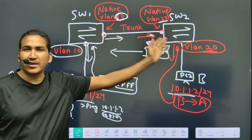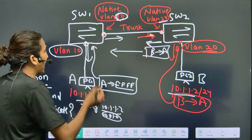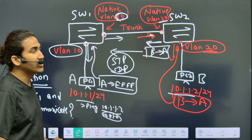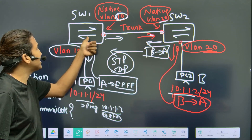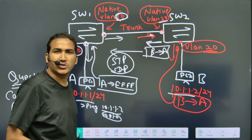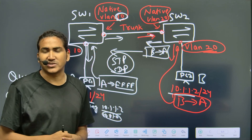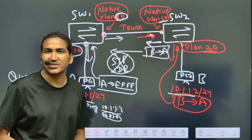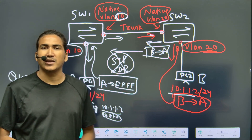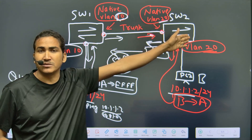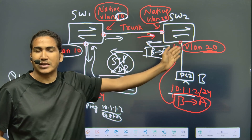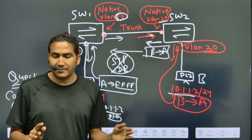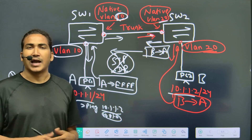However, protocols running on switches by default — like STP and CDP — will detect the native VLAN mismatch and may put the port in a blocking state. But if you disable STP and CDP, the switches will never learn each other's native VLAN. Switch 1 will always think native VLAN is VLAN 10 and Switch 2 will think native VLAN is VLAN 20, and communication between the PCs will work.